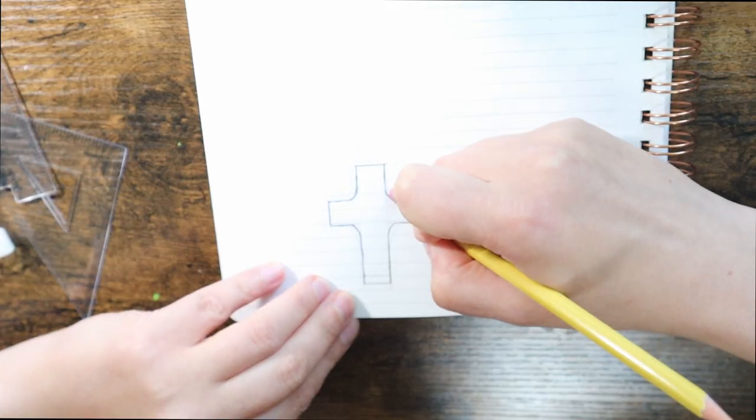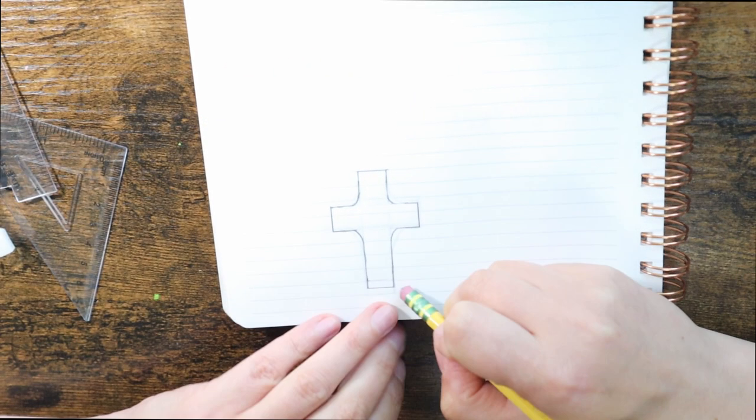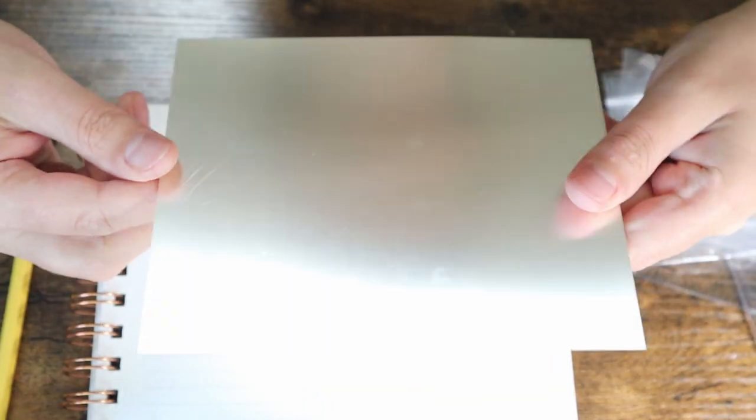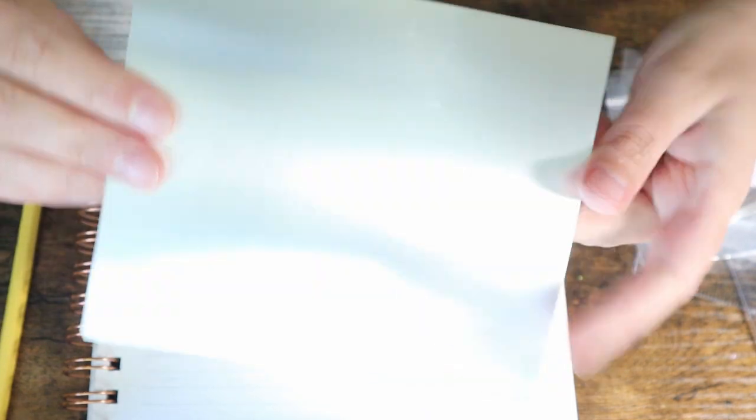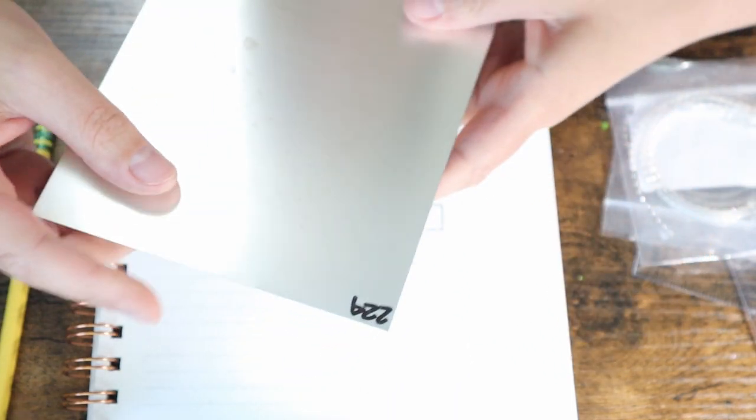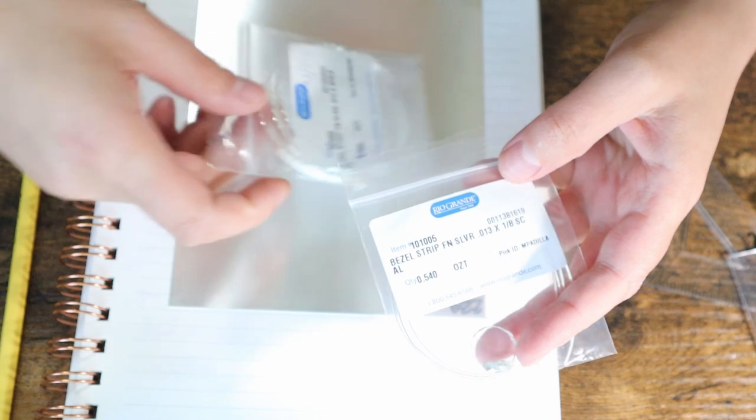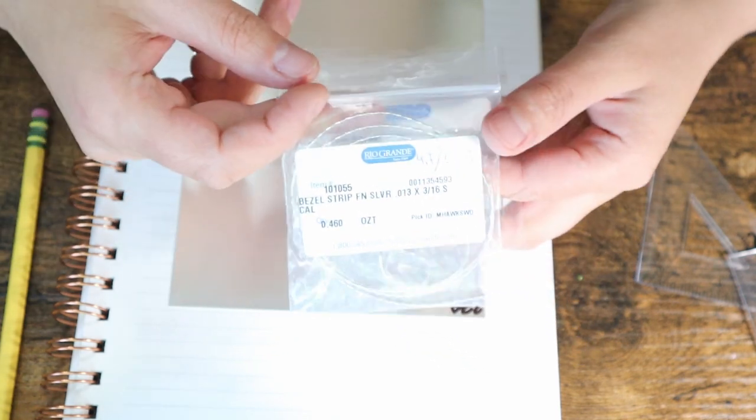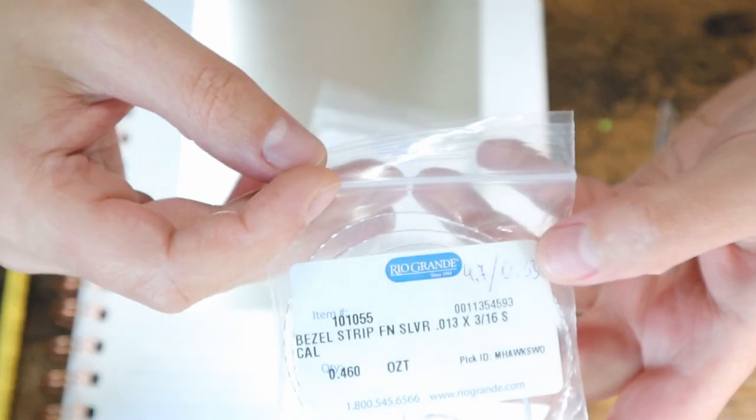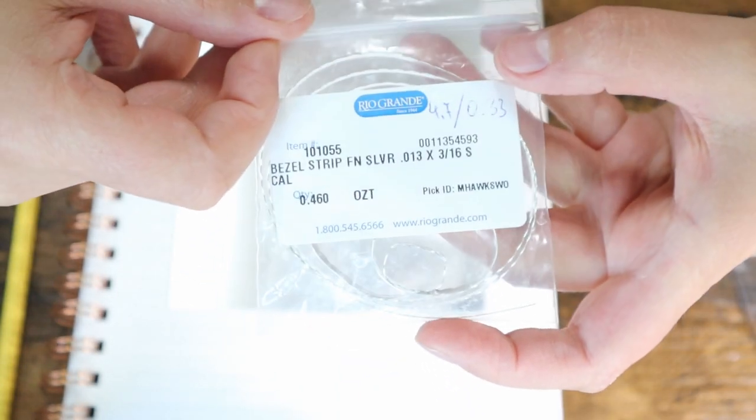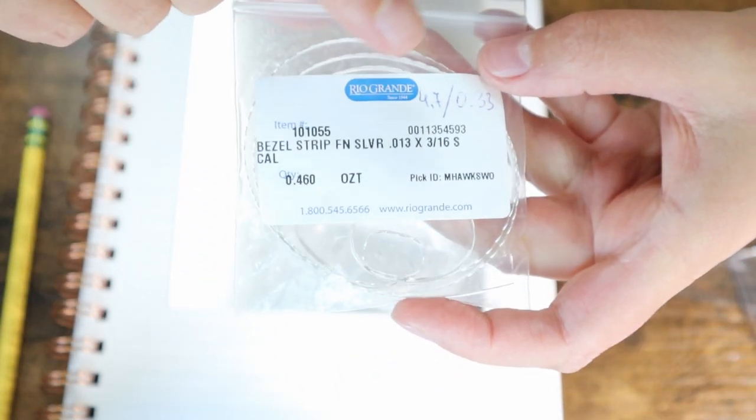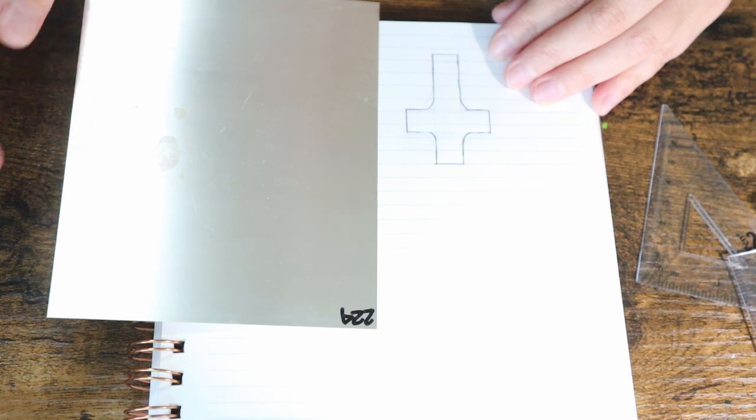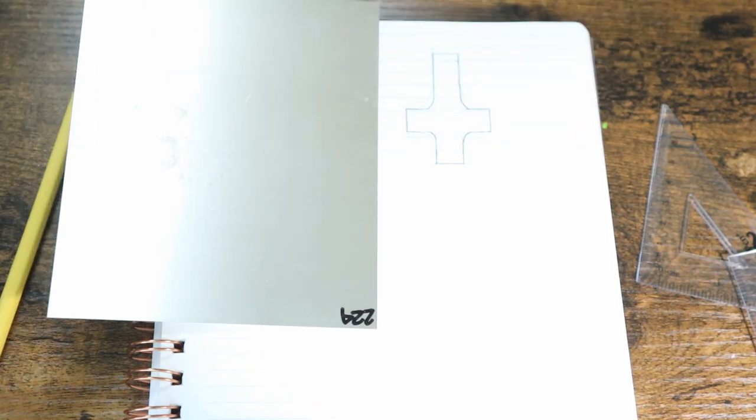I'm starting with drawing. This is the 22 gauge sterling silver sheet from Rio Grande. I have two sides of silver strips. One is a little short and one is long, so I'm going to use the long one because I can always make it shorter, so I'll be safe.